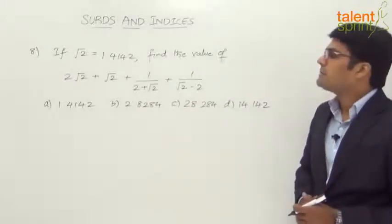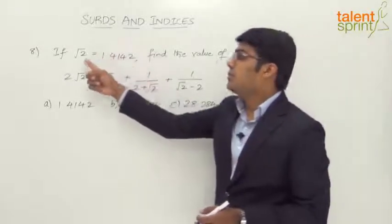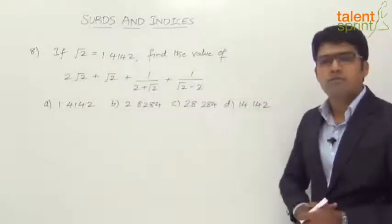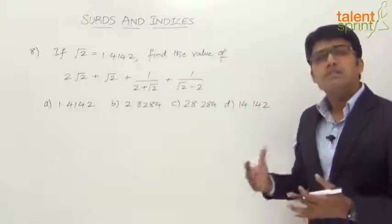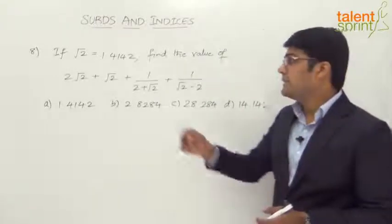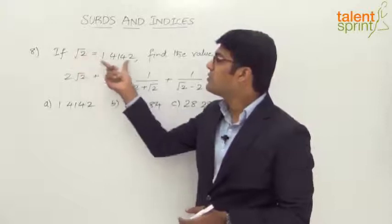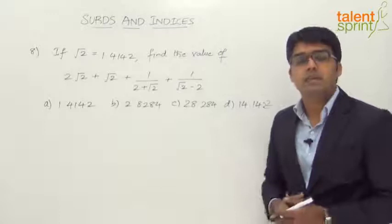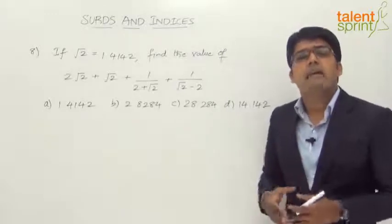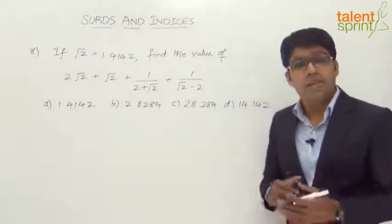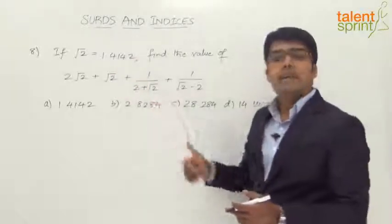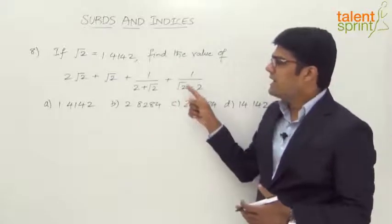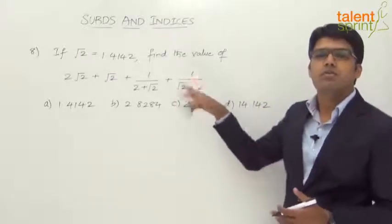We have been given the value of √2 ≈ 1.4142. There are multiple ways of answering such questions. You can start substituting the value of √2 as 1.4142 into the expression, but that makes the calculation really complex and wastes a lot of time. So never substitute the value initially. Instead, first simplify the given expression and then substitute the value of √2 if required.